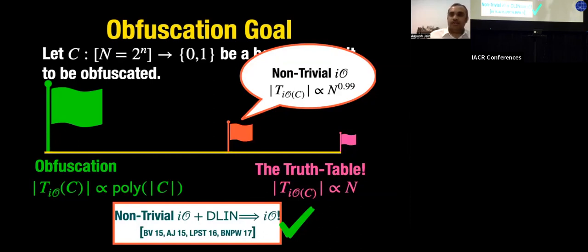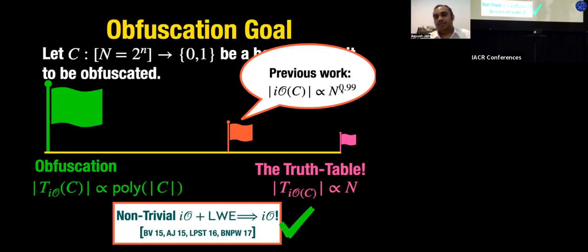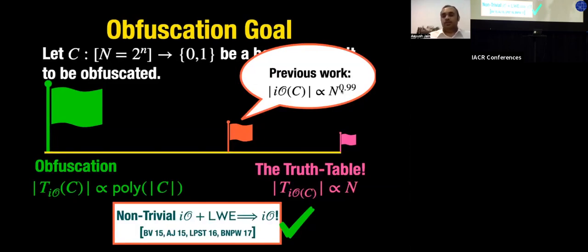Our previous work constructs an obfuscation scheme where the output size is small, but the running time can grow in N. For such non-trivial obfuscation to go to IO, the only way we knew was to additionally rely on LWE. In this talk, we focus only on making the running time of the obfuscator small.